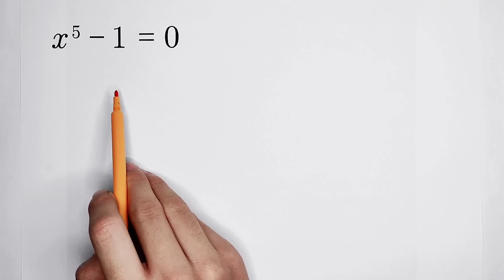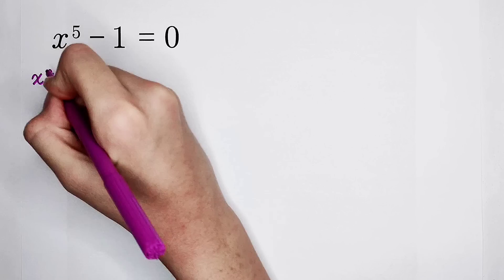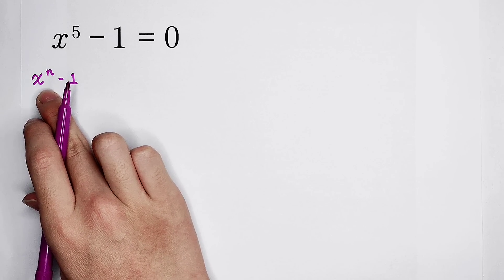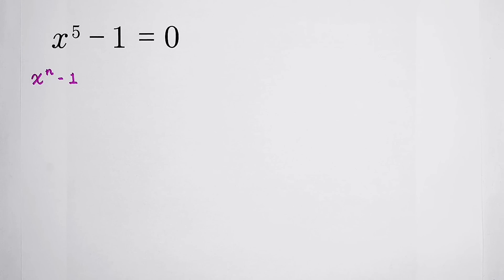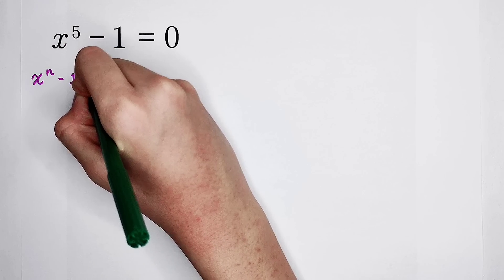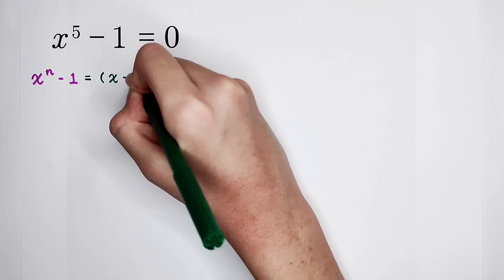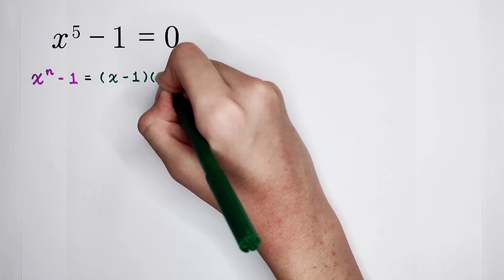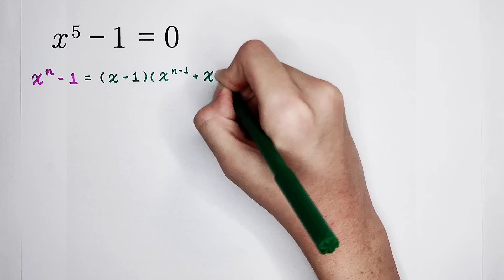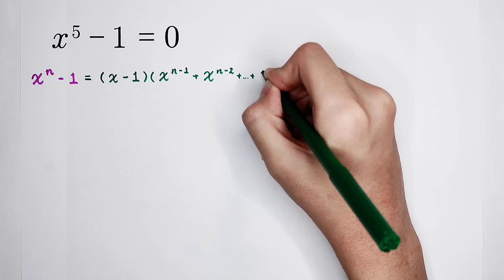Of course, we have a formula. Remember, x to the power n minus 1 can always be factorized, where n is a positive integer. The result of the factorization is — you should memorize it — x minus 1, times x to the power n minus 1 plus x to the power n minus 2 plus x to the power n minus 3, up to 1.